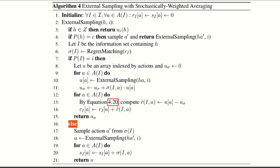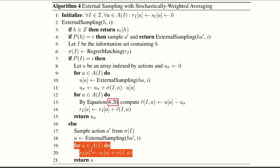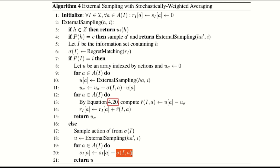If the current node is from the villain's point of view (player not equal to traversing player), we look at the strategy computed via regret matching, sample it using a random number generator to pick one action, make that recursive call, and save the utility. Before returning, we accumulate the strategies by adding the probability of taking each action—this is what we'll use to find the Nash equilibrium at the end. We return the utility u. That's really all there is to the algorithm; the main difficulty comes from dealing with the game state.